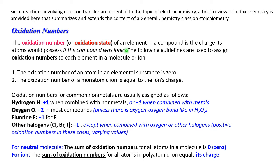So for ionic compounds they already have it. The following guidelines are used to assign oxidation states to each element in a molecule or ion.